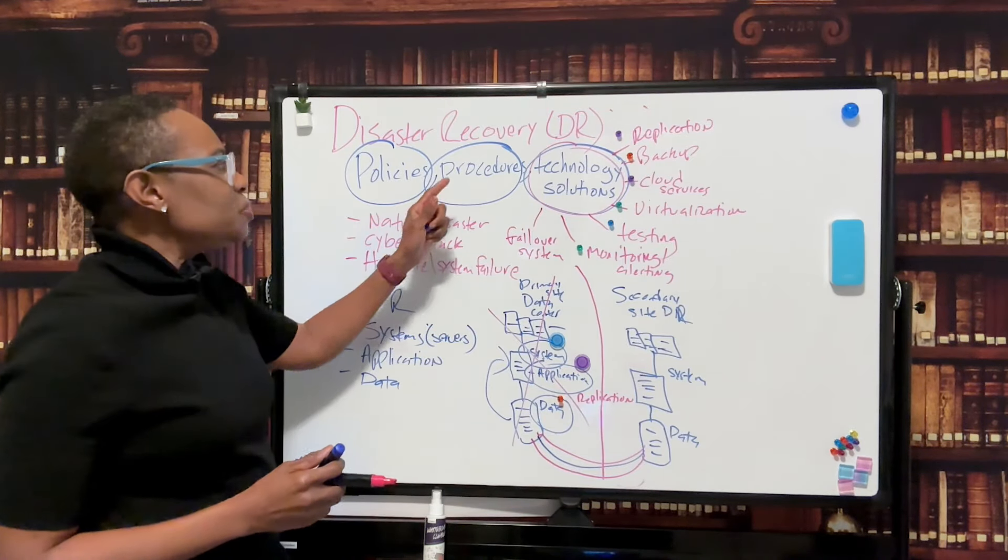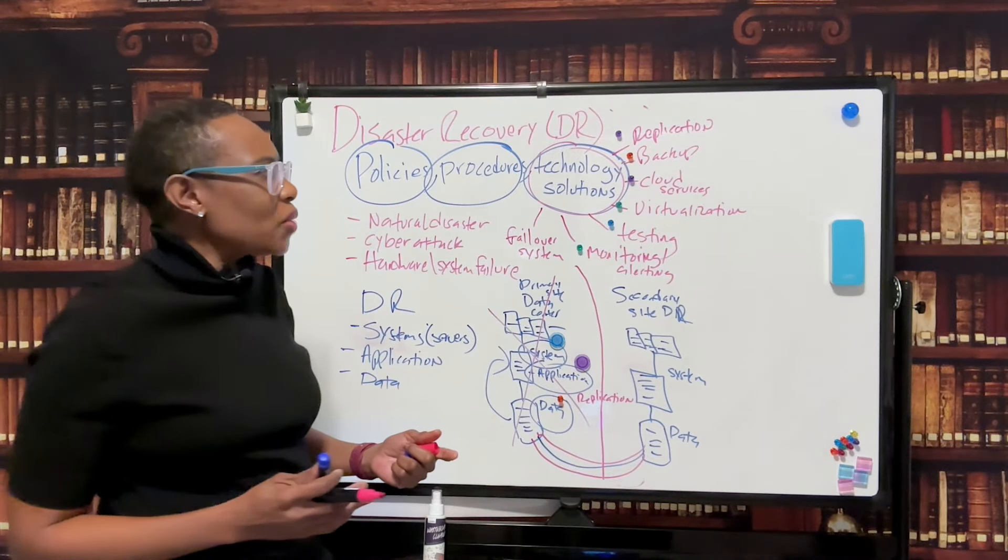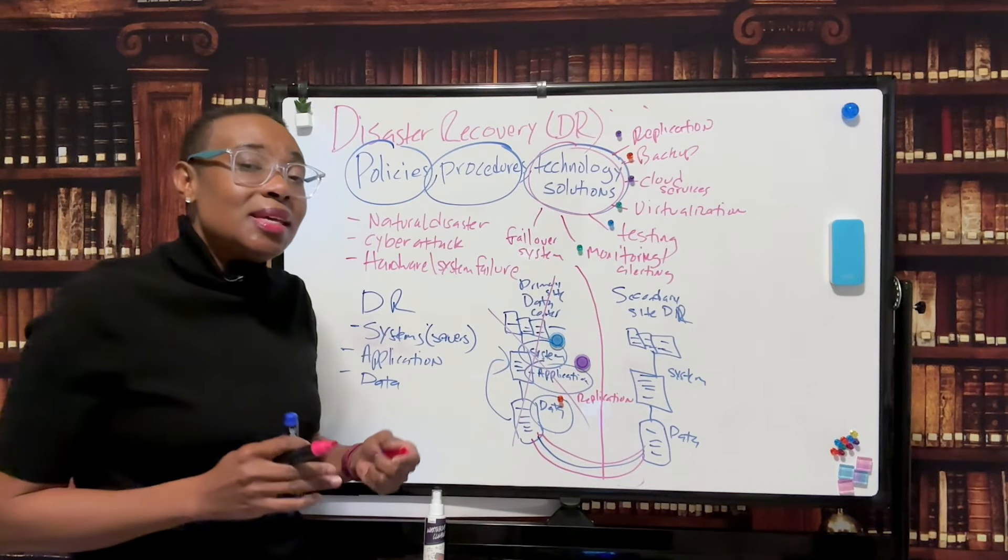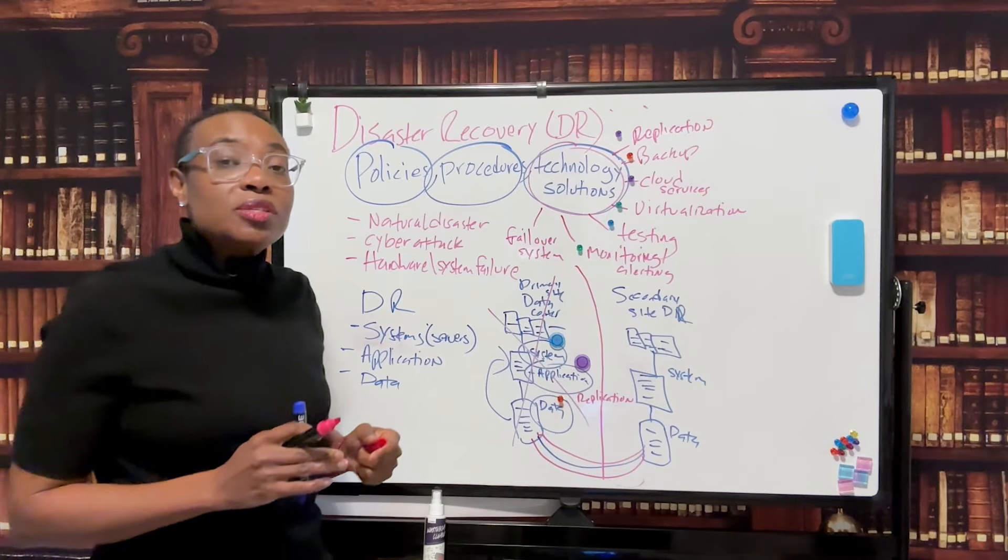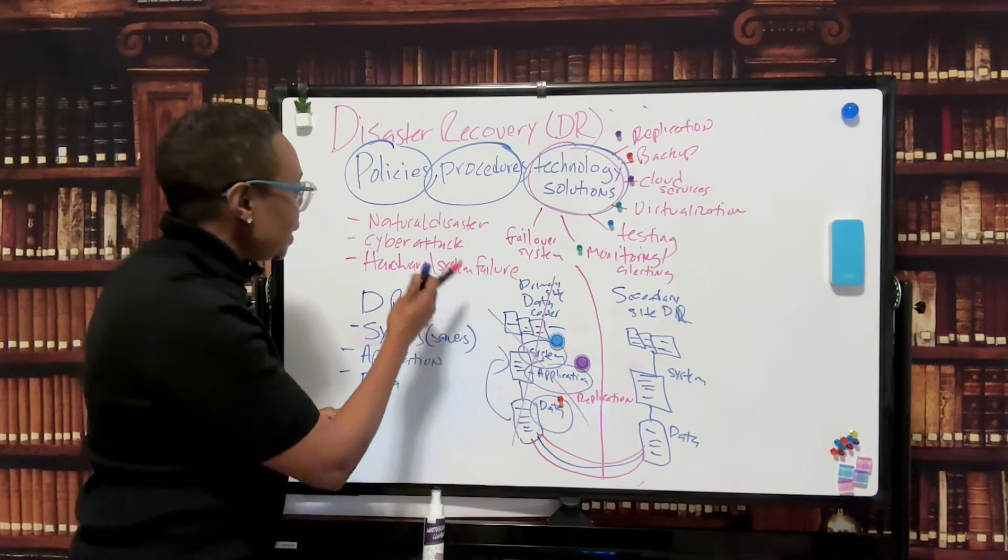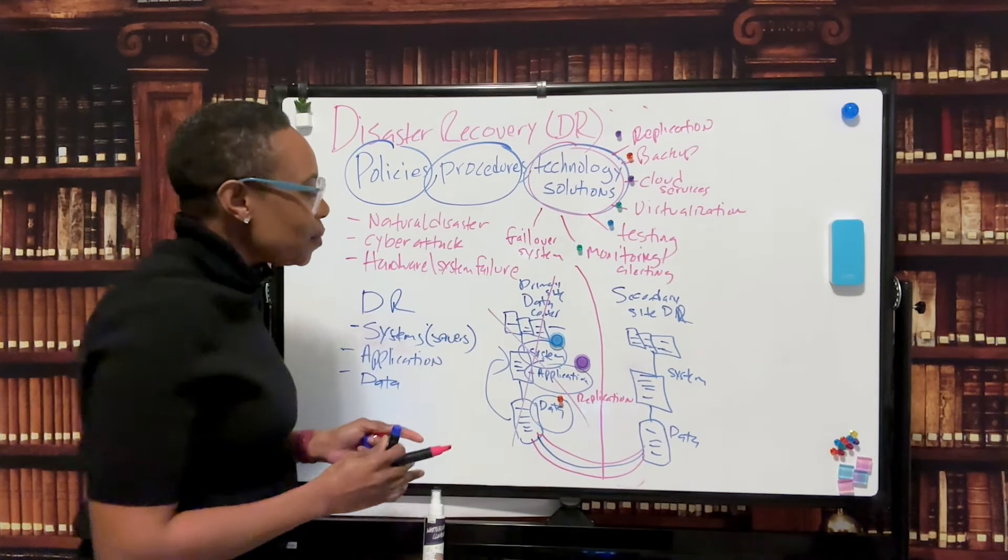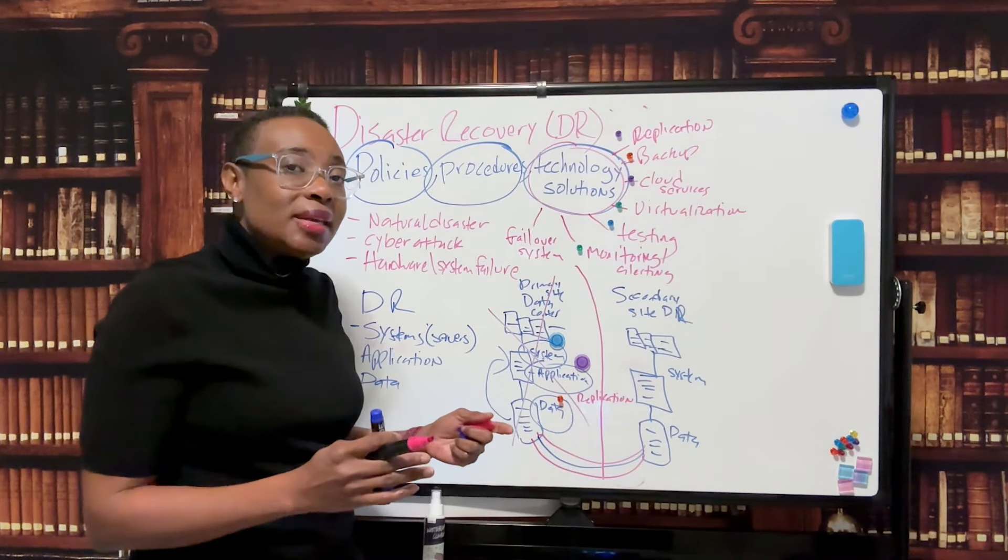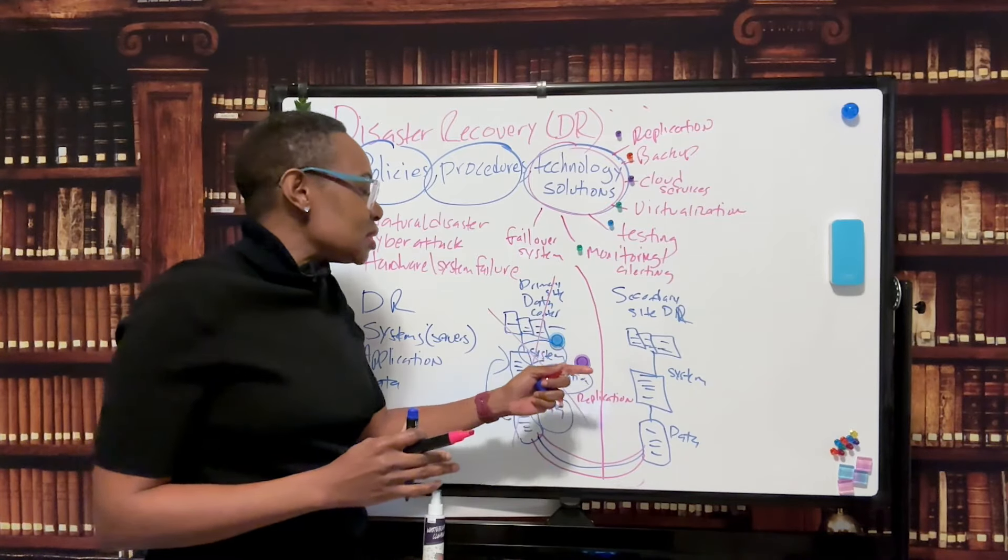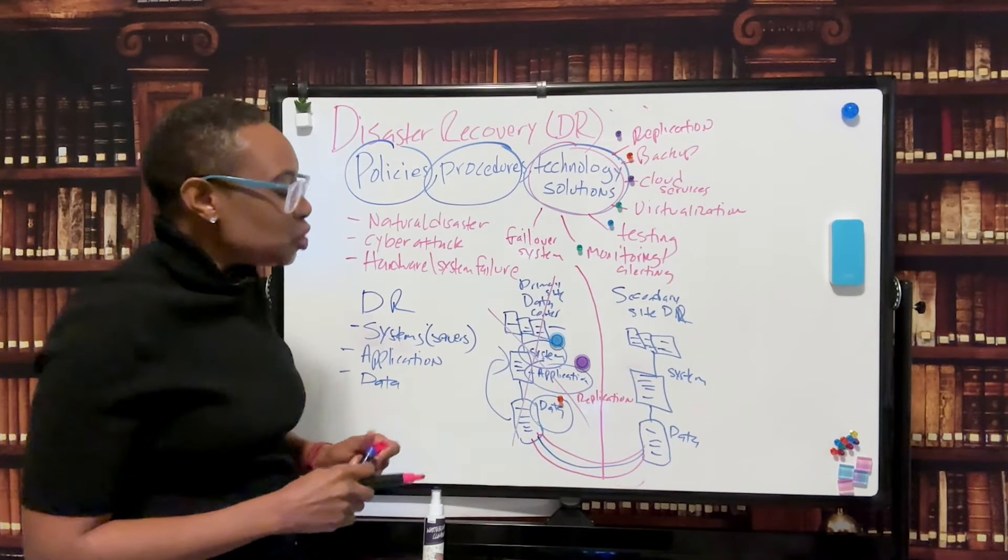So I hope you enjoyed this lecture. You know, just to recap: policies, procedures, and technology solutions make up DR. There's a number of tools and strategies: replication, backups, cloud services, virtualization, testing, monitoring and alerting, and of course failover mechanisms. And DR, the primary site has systems which are servers, application, and data. Once you have your primary source and you want to create your secondary site, you also want to have a replica of those systems, servers, applications. And you want your data to be replicated between the two sites.